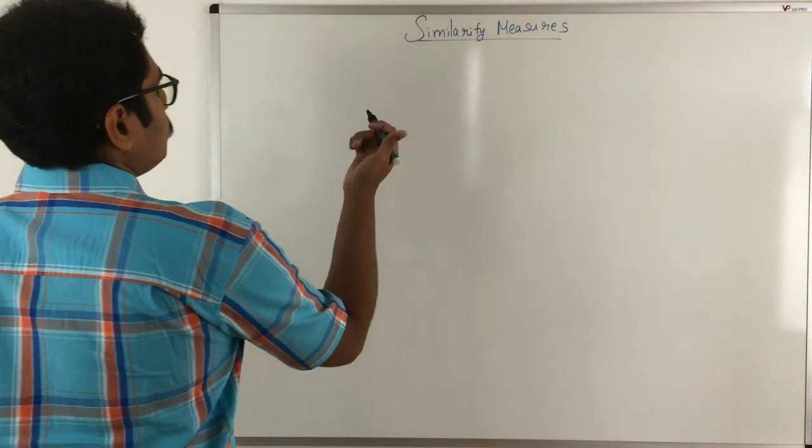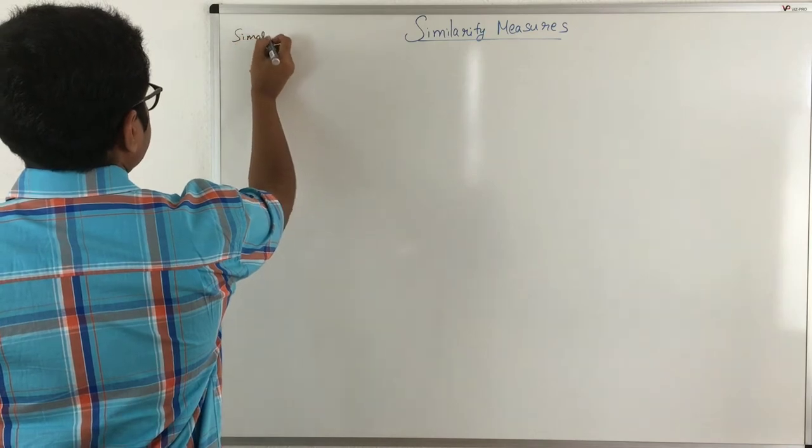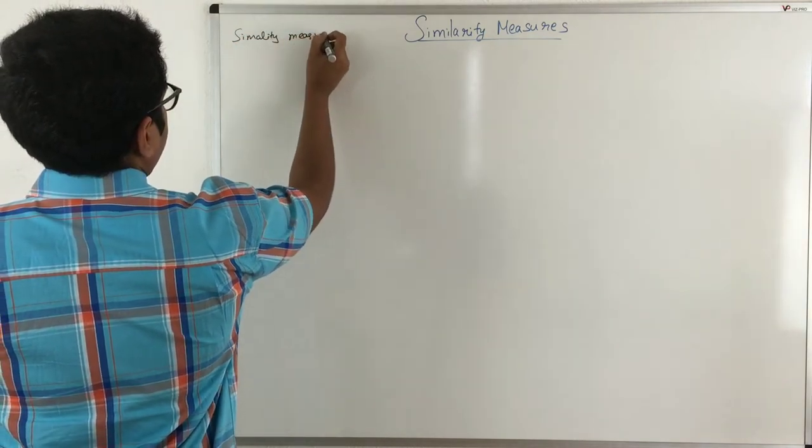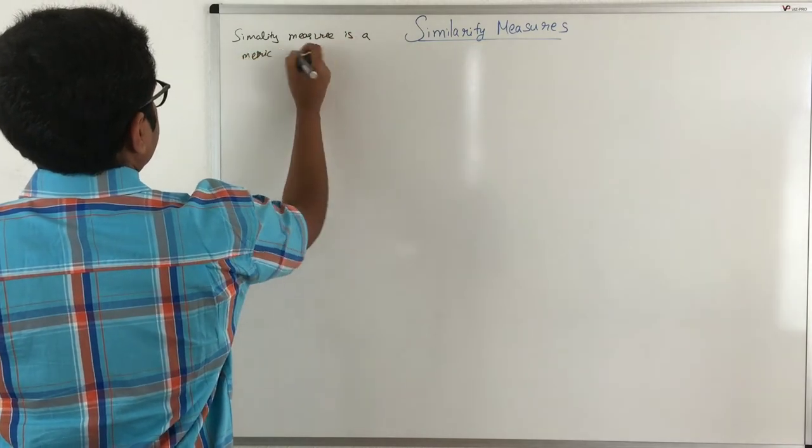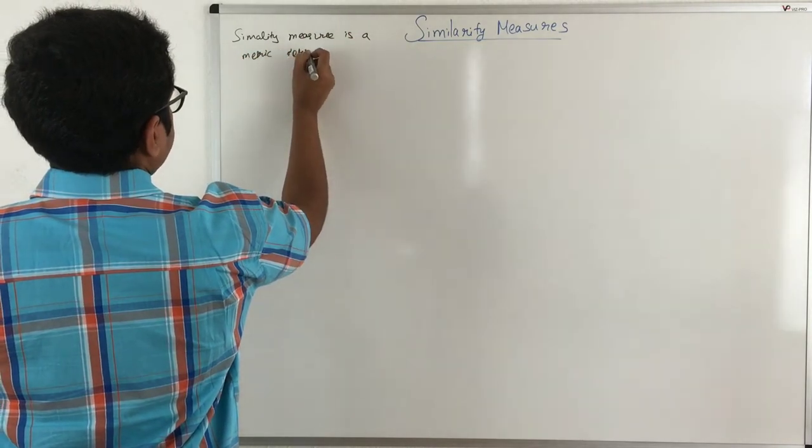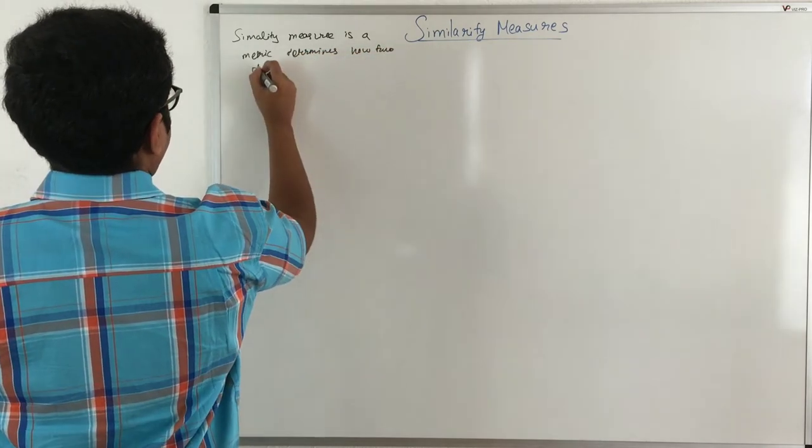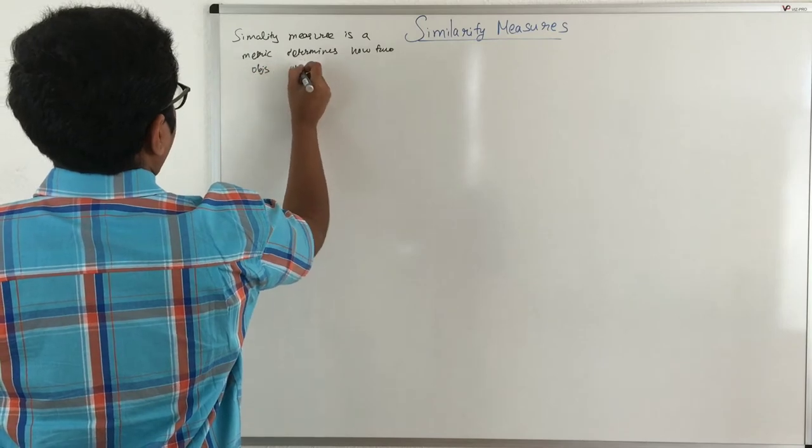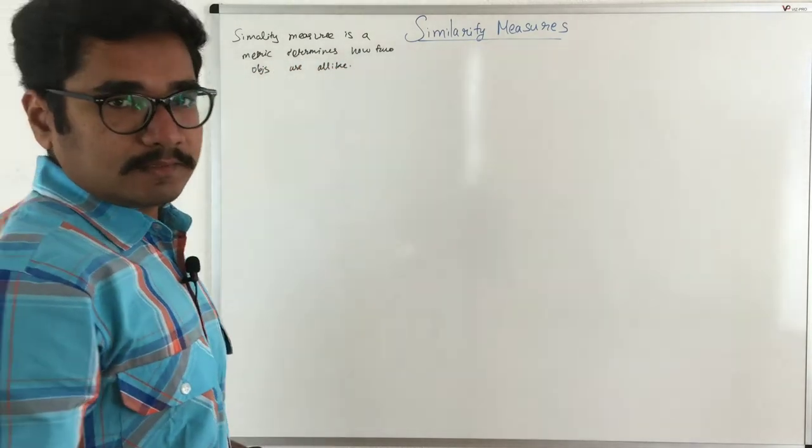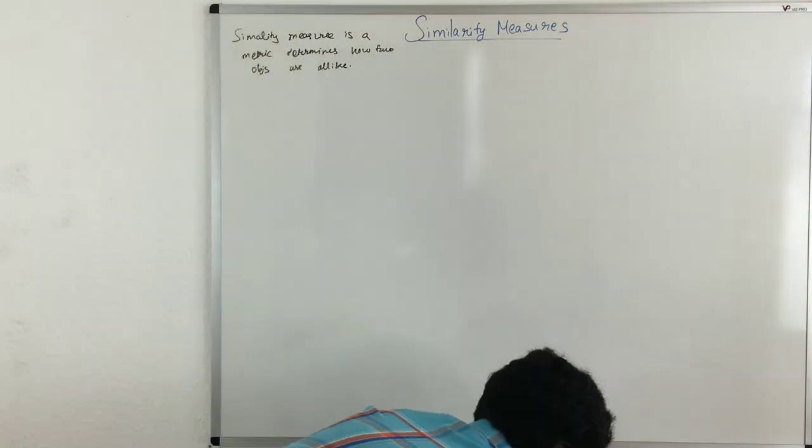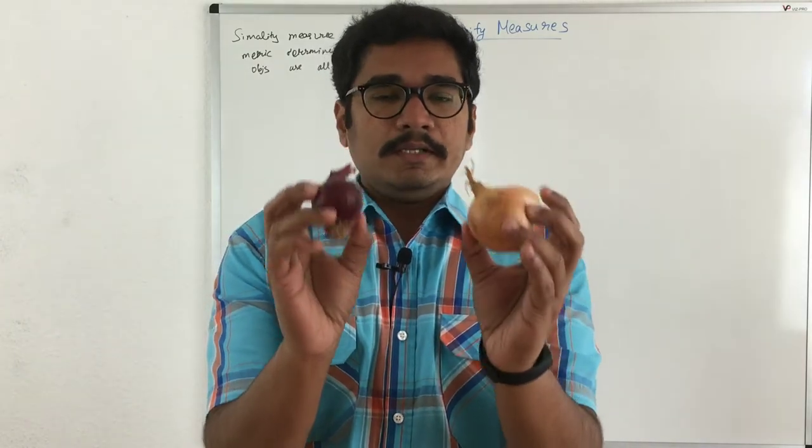So we start with what is basically similarity measure. It's basically a metric which determines how two objects are alike, means how they both are same. So consider I have these two objects. So these are two onions.